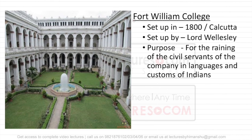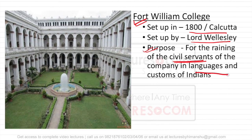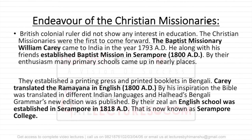The next institution established was Fort William College in 1800 AD at Calcutta, again set up by Lord Wellesley. The purpose of this was mainly for the training of civil servants — it was essentially a production factory for civil servants. They were taught different languages and customs because civil servants needed to deal with different kinds of people and populations.